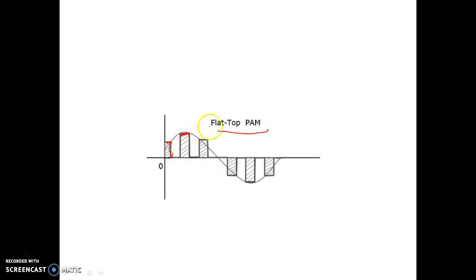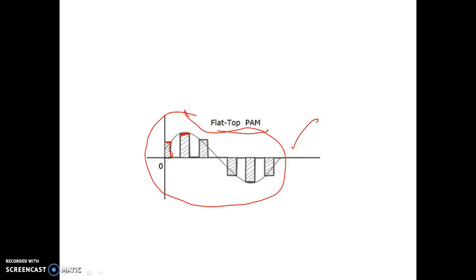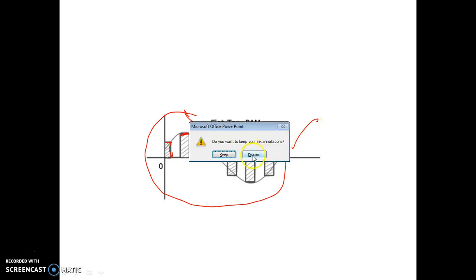From the waveform it is clear that flat top sampling can be easily implemented using a sample and hold circuit — that is, using one nMOS pass transistor followed by a unity gain amplifier formed by an op-amp, BJT, or MOSFET. If you know the sample and hold circuit, well and good; if not, please go through the link given in the description. Now let us go to the practical implementation.